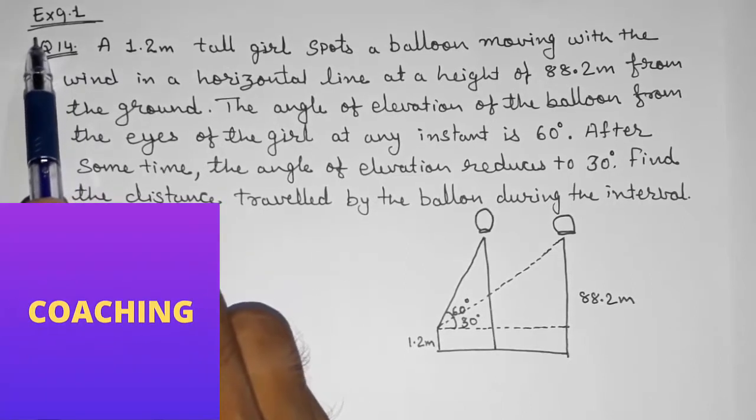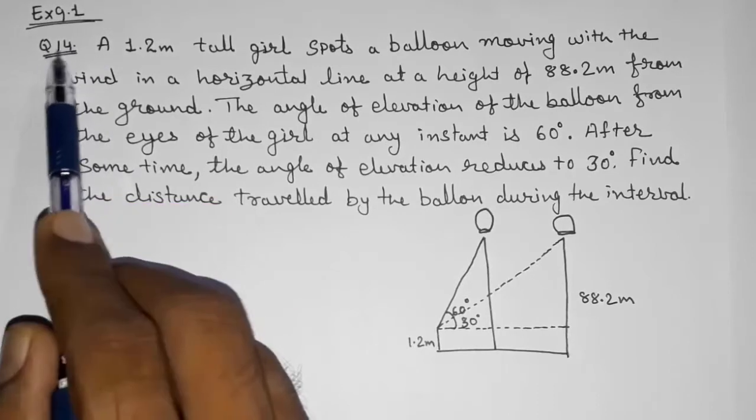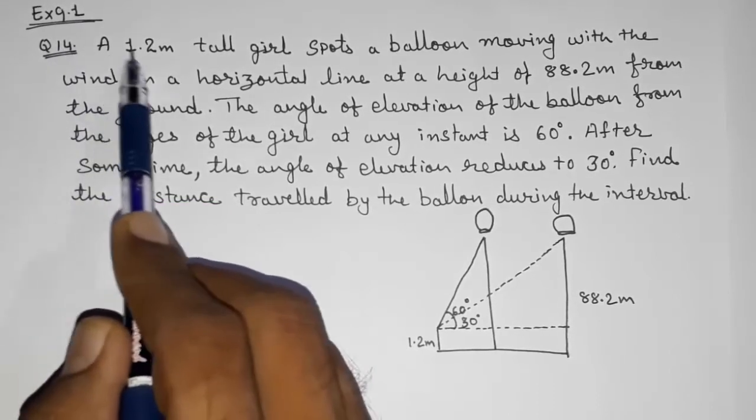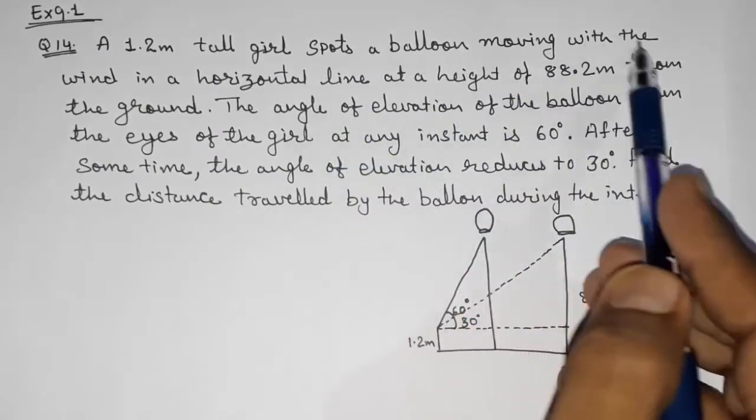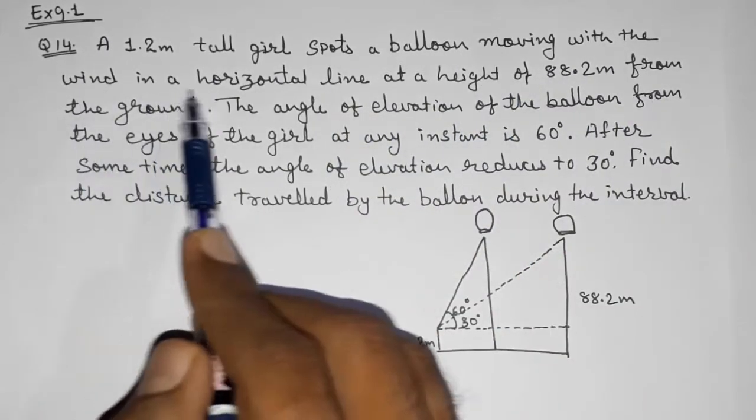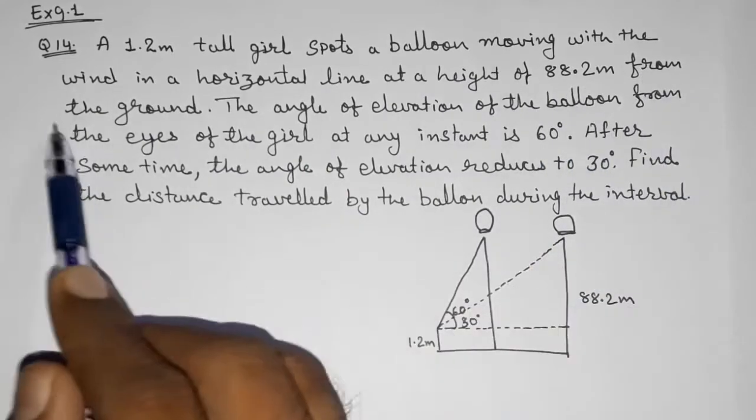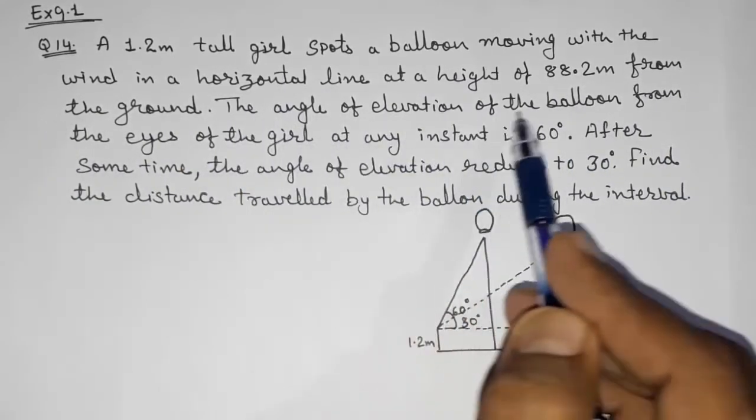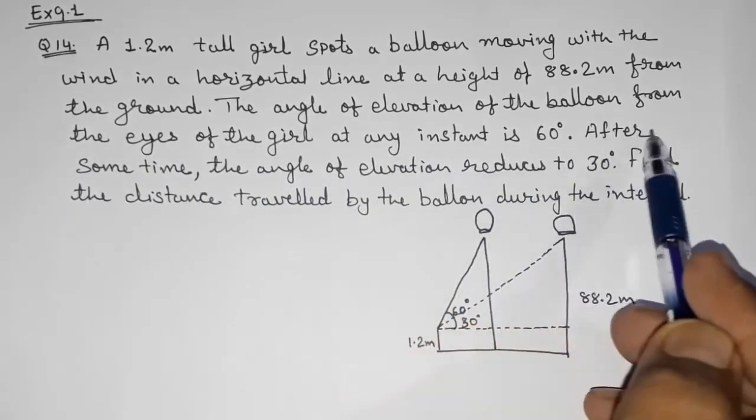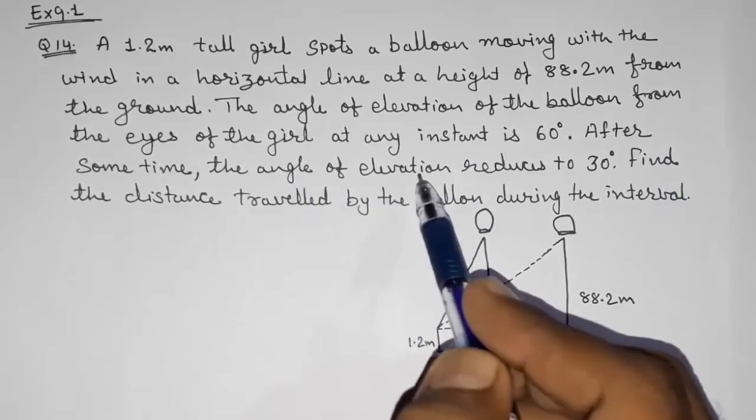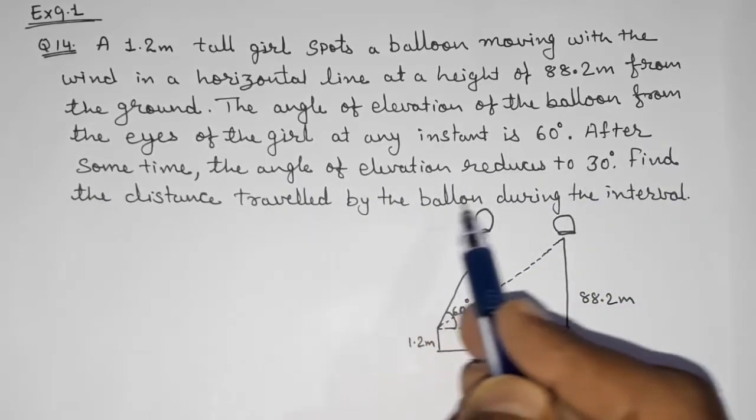Hello friends, today we are going to solve CBSE class 10th maths exercise 9.1 question number 14. A 1.2 meter tall girl spots a balloon moving with the wind in a horizontal line at a height of 88.2 meters from the ground. The angle of elevation of the balloon from the eyes of the girl at any instant is 60 degrees. After some time, the angle of elevation reduces to 30 degrees. Find the distance traveled by the balloon during the interval.